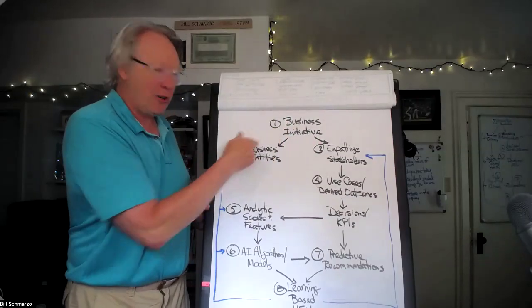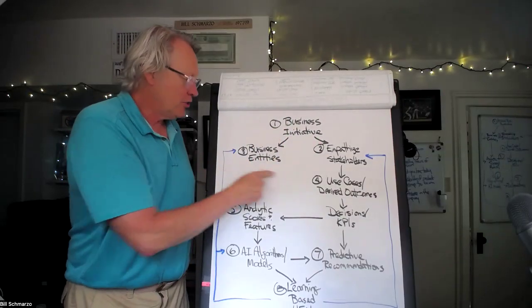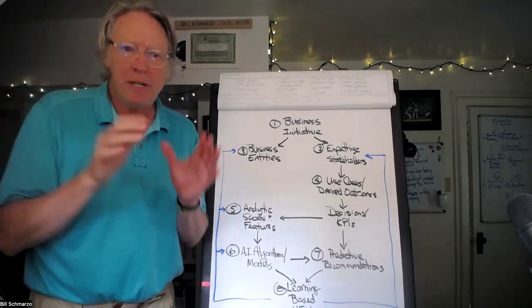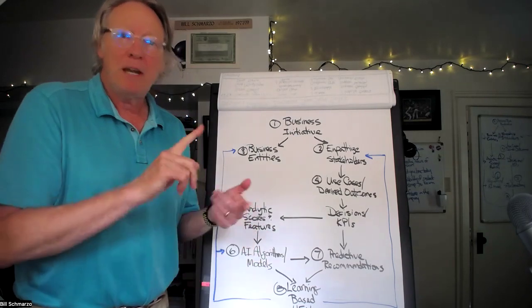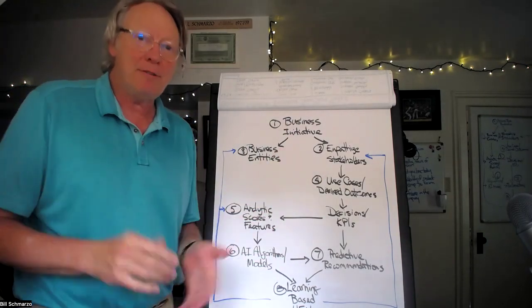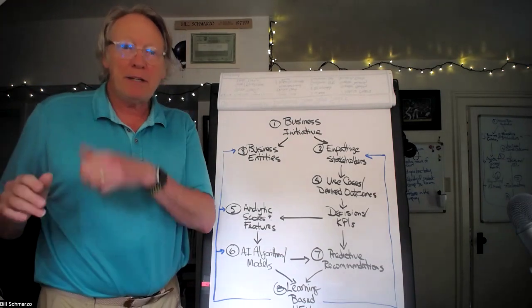At the same time we're doing that, we're going to start our data science track. We're going to start modeling our key business entities. A business entity can be either a human or a device. A human can be a teacher, a nurse, a doctor, a technician, an operator, an athlete. Devices can be compressors, chillers, press machines, trains, cars.